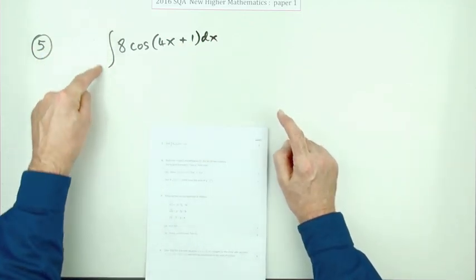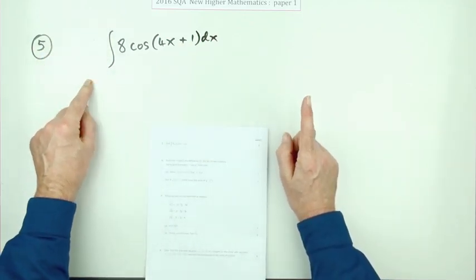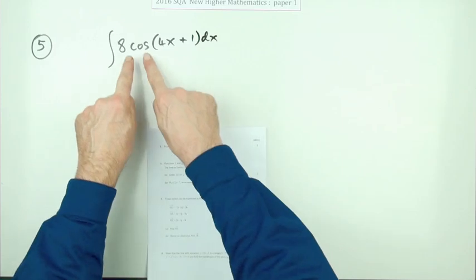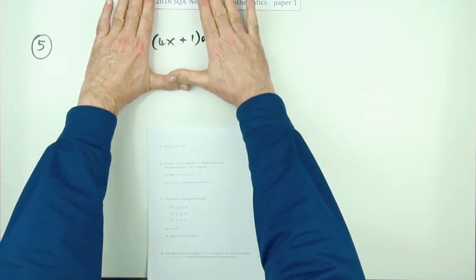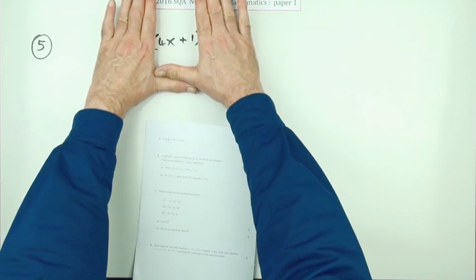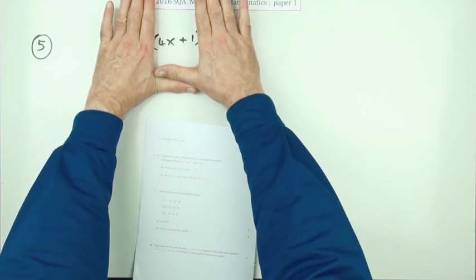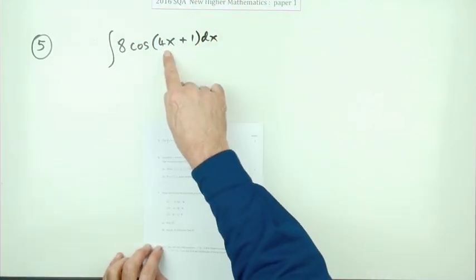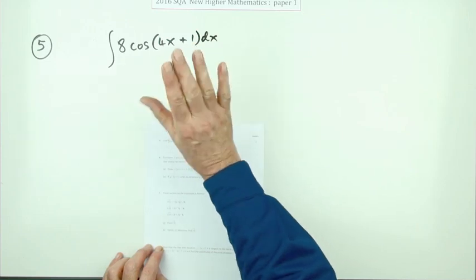When it comes to integration, you can only do that at the higher level if it happens to be a function of a linear function. You can differentiate anything, but you can only integrate ones that operate on linear ones, ones that look like the equations of lines, because then the derivative of this part is just a constant.